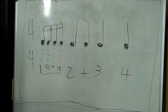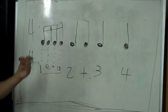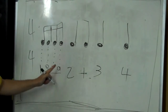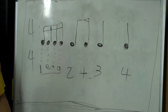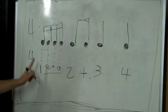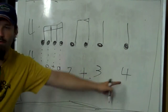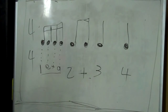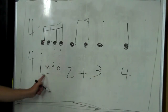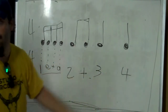So let's try this. One, two, ready, go. One E and A, two and three, four. You guys forgot to play that — let's do it again. Ready, go. One E and A, two and three, four. Do it again. Ready, go. One E and A, two and three, four. Play it that way.